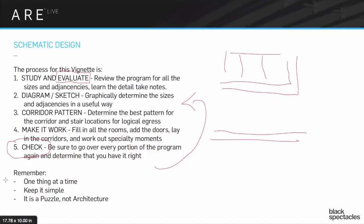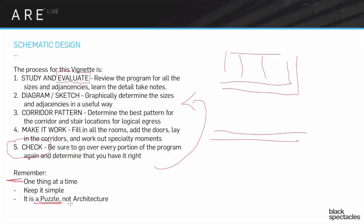Key to remember: one thing at a time. You're moving reasonably fast on an awkward program — the vignette programs are outdated and kind of ridiculous — but you should use that to your advantage. It's not wildly complicated and doesn't need a tremendous amount of nuance. It's really simple and straightforward if you let it be. Do one thing at a time and keep it simple. As you move through, you're not designing — you are doing a puzzle. It's not architecture; it's a puzzle. It has rules the way a puzzle has rules. Don't try to make it architecture. Think of it as a puzzle, and your life will be much, much easier.